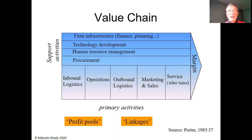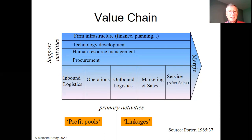In the top half of the diagram are what he calls support activities — these are needed across all of the primary activities. Procurement is needed because, for example, you need forklift trucks for inbound logistics; for outbound logistics you might need a distribution network; for operations, the equipment and consumables; and there's also procurement for marketing, sales, and after-sales. So procurement applies across the board.